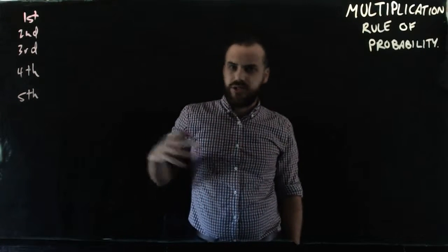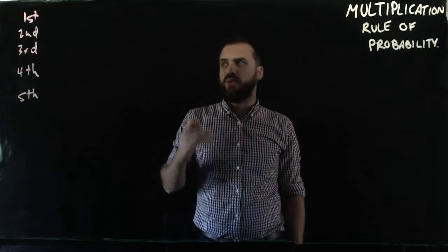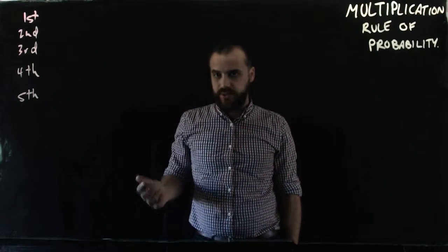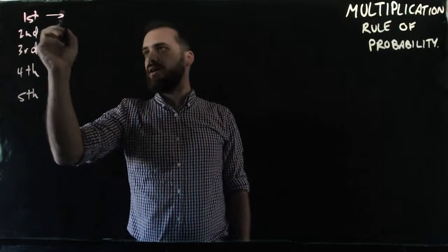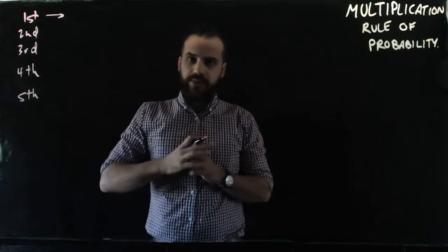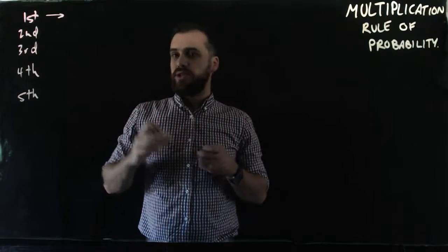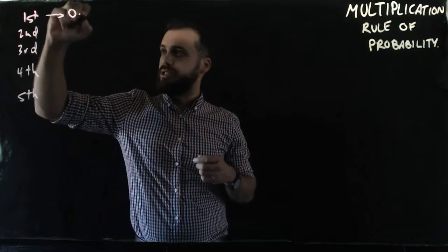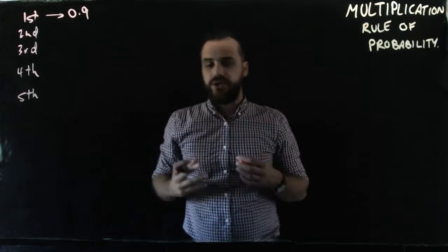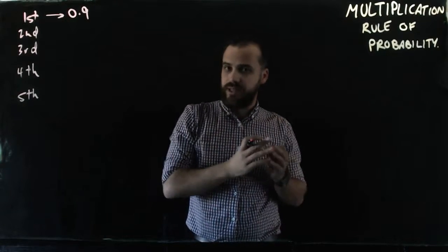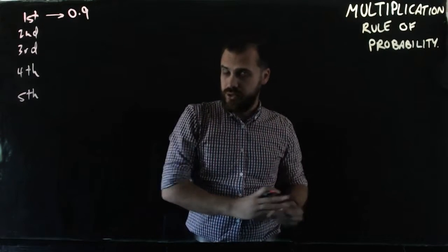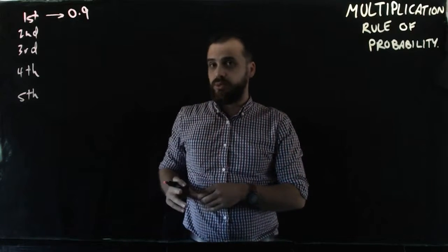Let's assign some probabilities to us winning each of those games. Remember a probability can be between 0 and 1, as in 0% to 100%. Let's say we have a 0.9 chance of winning the firsts. That means there's a 0.1 chance we'll lose, and a 0.9 chance we'll win.